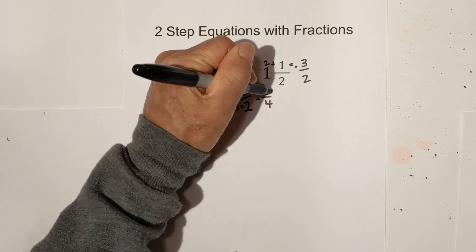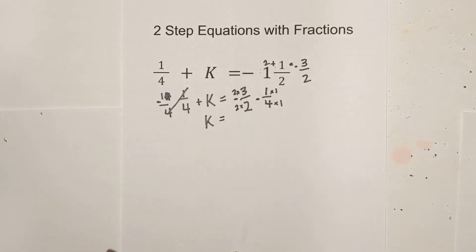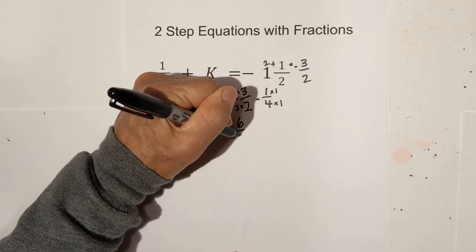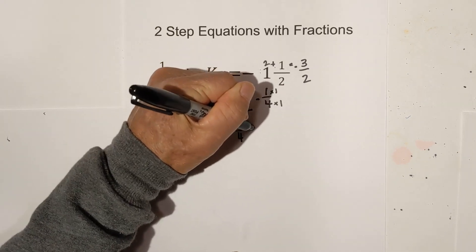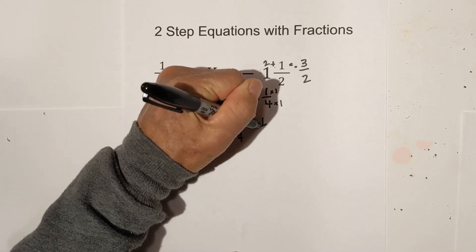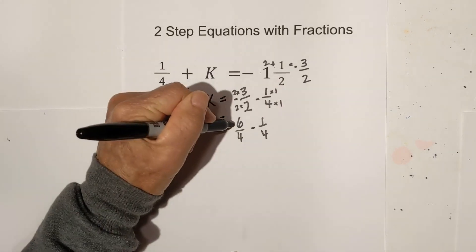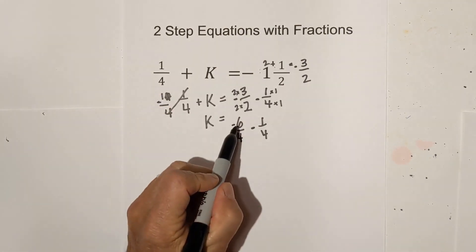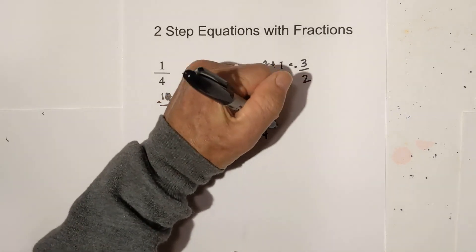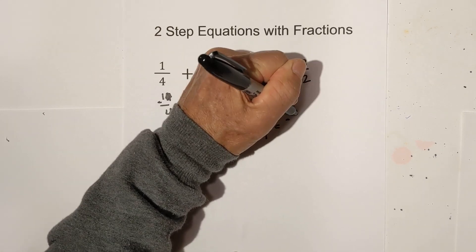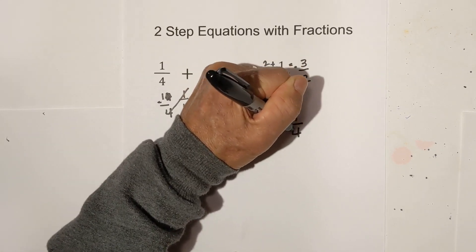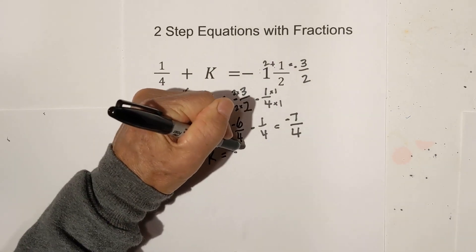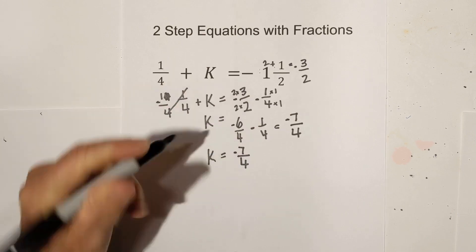So 2 goes into 4 2 times, and 4 obviously will multiply this by 1. So when I do that, 3 times 2 is 6 over 4, and then we have a 1 over 4. Remember, this is negative. Now what we do is negative 6 and negative 1. It's like adding but keeping the sign is a negative 7. And you keep the 4. So k is equal to negative 7 over 4.